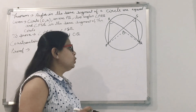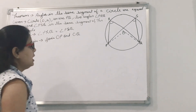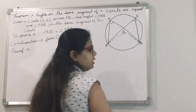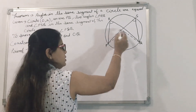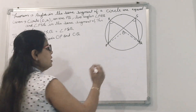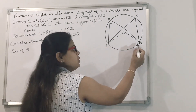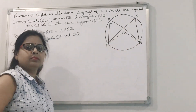We know that the angle subtended from an arc of a circle to the center of a circle is twice the angle subtended from the same arc of the circle to any point on the circle.